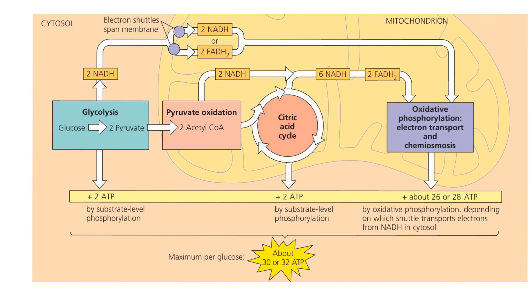Let's calculate the overall ATP production in aerobic respiration stage by stage. The first stage is glycolysis: four ATP molecules are produced, but since two ATP molecules are used, the net gain is two ATP molecules, produced by substrate-level phosphorylation. The second stage is the link reaction, in which pyruvate is oxidized into acetyl-CoA, and there is no ATP production here. The third stage is the citric acid cycle — the Krebs cycle — where two ATP molecules are produced per glucose molecule by substrate-level phosphorylation. But that's all. The great majority of ATP is actually produced by oxidative phosphorylation.